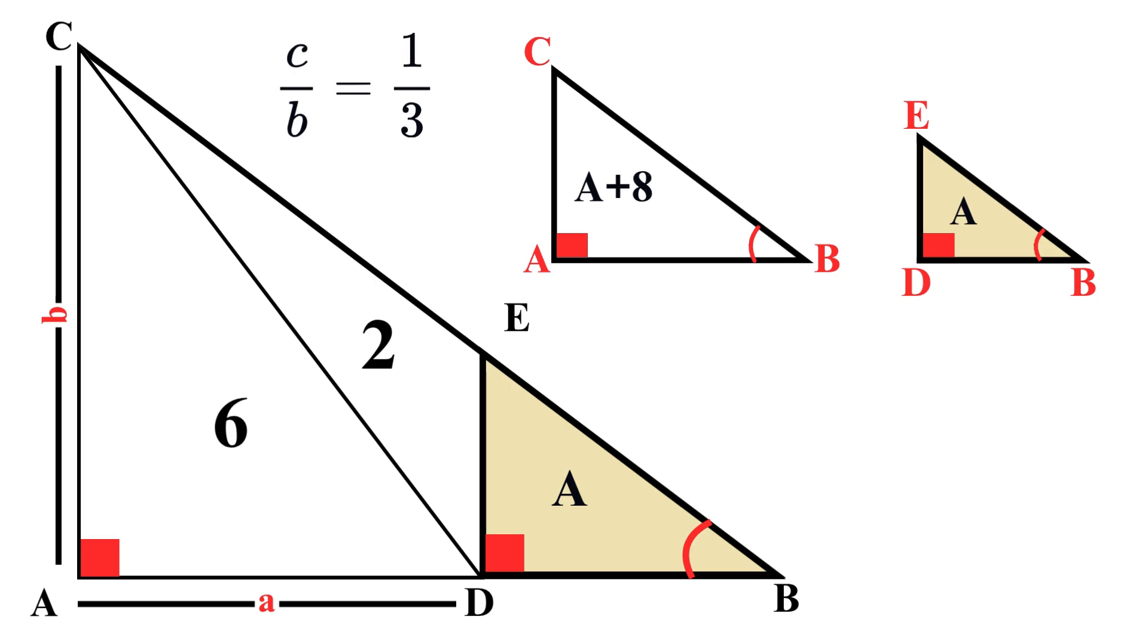We use the property of similar triangles which we mentioned earlier. We can say that the ratio of their corresponding sides is equal to the square root of the ratio of their areas. So c over b equals the square root of A over A plus 8. And we already know that c over b equals 1 over 3, so we can substitute this value.